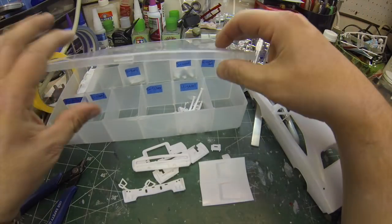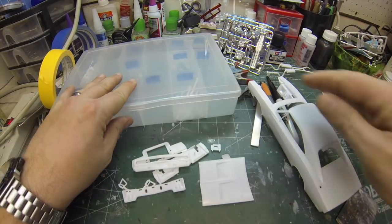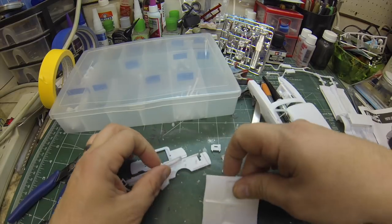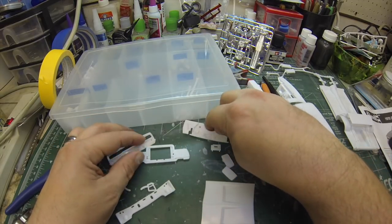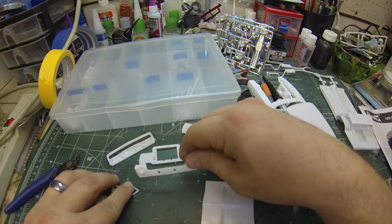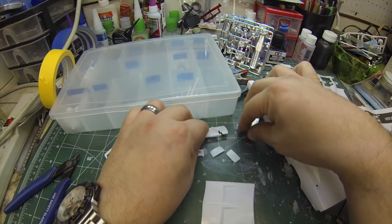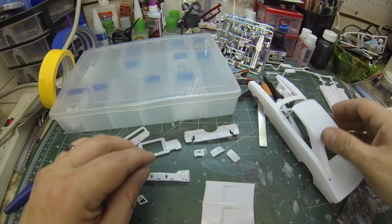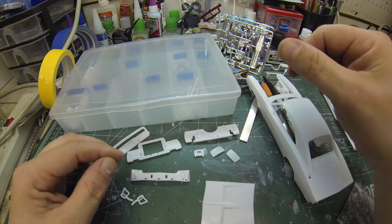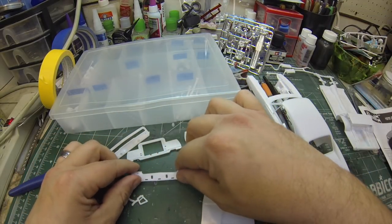I have them all ready to be painted. So what I like to do first is to get this body started. So this is going to have to go into primer, and that's going to have to cure, and then it's going to have to go into color, and that's going to have to cure, and then we're going to have to clear coat it, and that's going to have to cure, and then we're going to have to wet sand it and polish it.